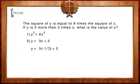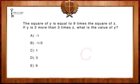3 times negative 1 third equals negative 1. The equation now reads, y equals negative 1 plus 2. Negative 1 plus 2 is 1. As we can see, y equals 1, or answer C.